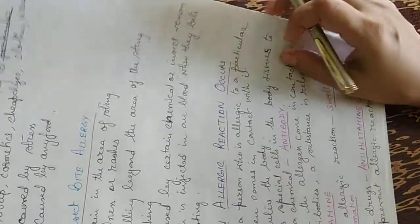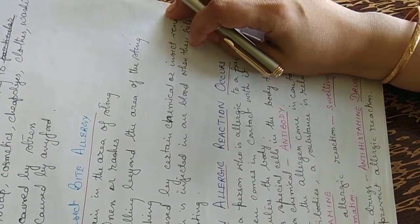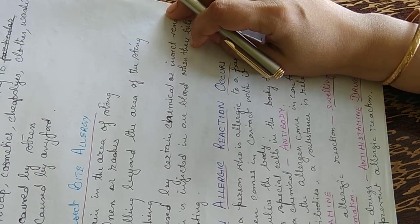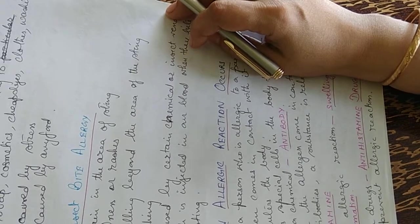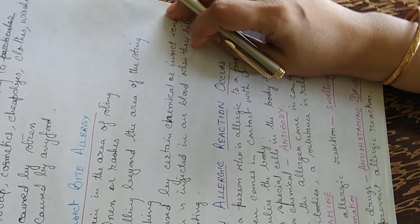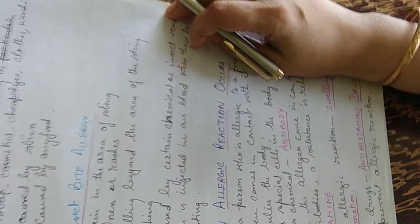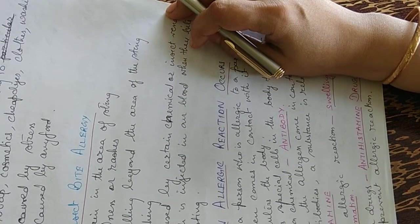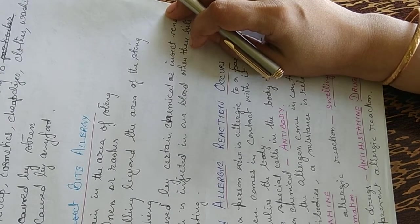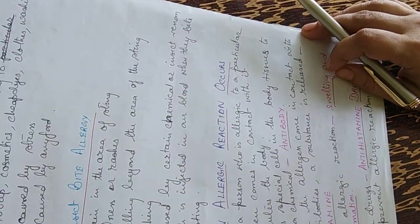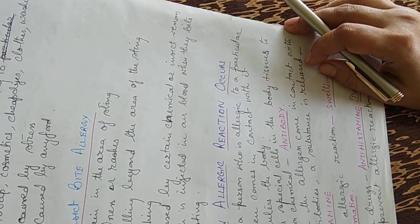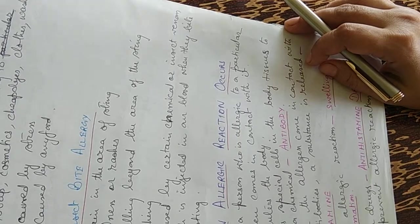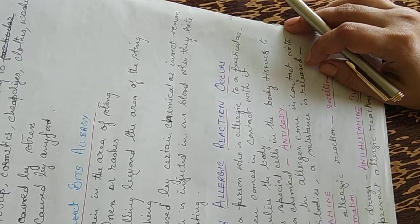Insect bite allergy is caused by the sting of the insect. There is pain in the area of the sting, redness or rashes, and swelling beyond the area of the sting. There's itching. This is caused by certain chemicals or insect venom which is injected in our blood when they bite or sting.